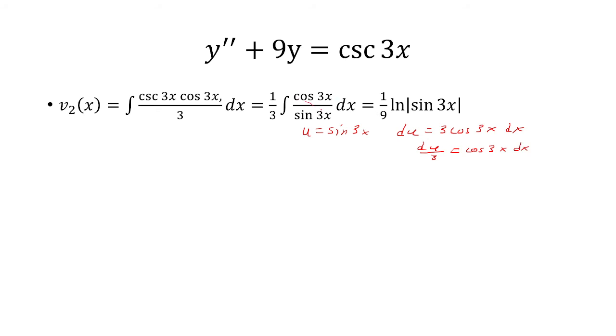So this whole thing now is just du/3, and then this is just u so it's basically du over u, which is the natural log of u and u is sine 3x and then you have 1/3 times 1/3 is 1/9. So that's how I got this answer.